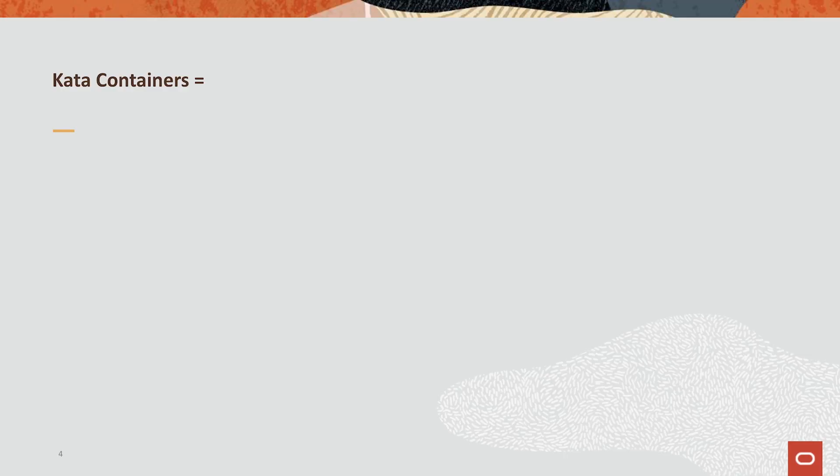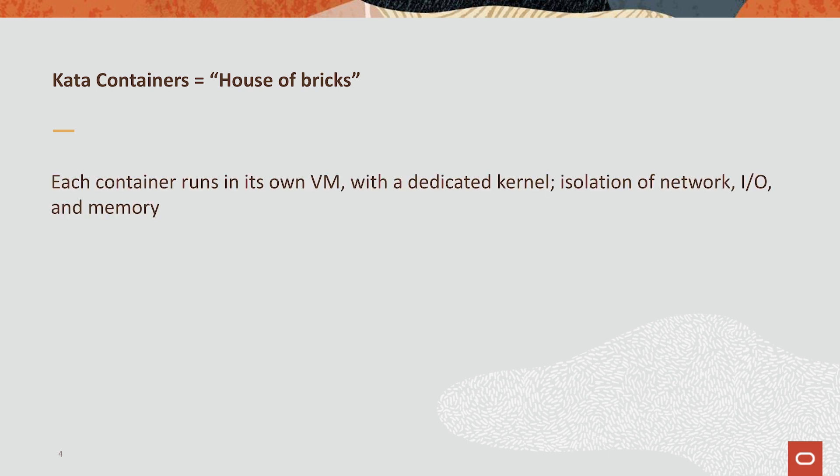So you could think of Kata containers as a house of bricks from the classic nursery tale. Each container runs in its own virtual machine, dedicated kernel, isolation of network IO and memory. It even can use the hardware reinforced isolation like the Intel VT extensions.